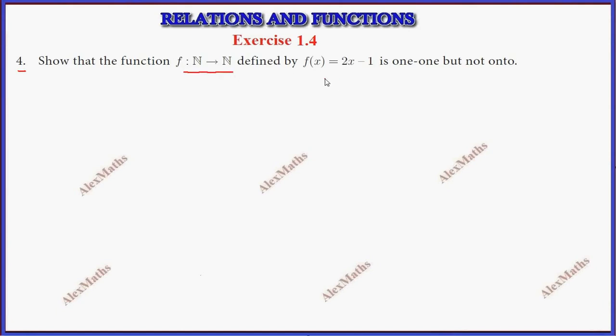Show that the function f from ℕ to ℕ defined by f(x) = 2x - 1 is one-to-one but not onto.